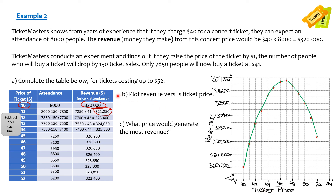That was part B. Part C: what price would generate the most revenue? Looking at the graph, the most revenue is way up at the top. The biggest number we got was $326,650, and we got that from selling tickets at $47. That was actually the highest revenue in our table.